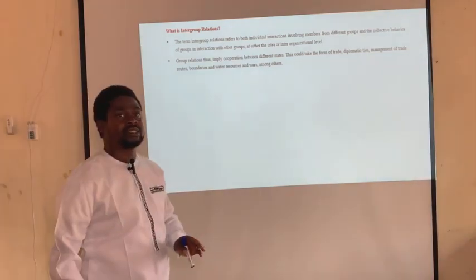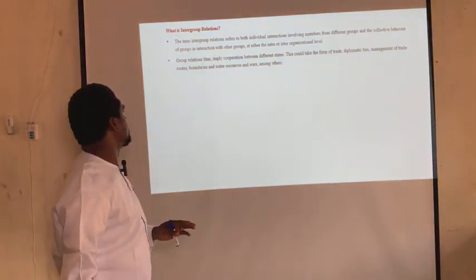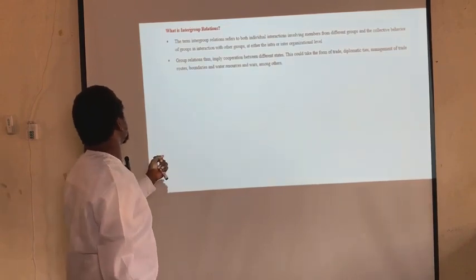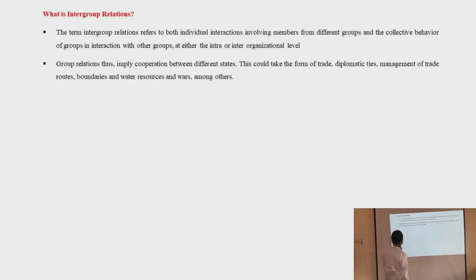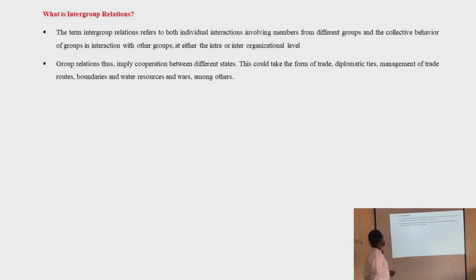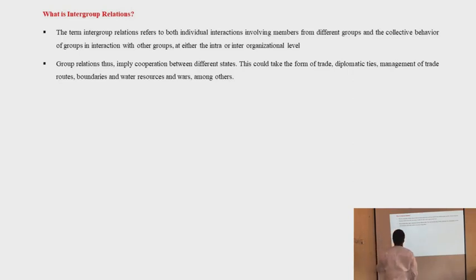The question now is: what is intergroup relations? Intergroup relations refers to both individual interactions involving members from different groups and the collective behavior of groups in interaction with other groups at either the intra- or interorganizational level. Group relations imply cooperation between different states, which could take the form of trade, diplomatic ties, management of trade routes, boundaries and water resources, and wars, among others.